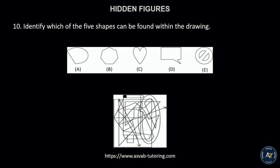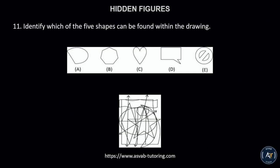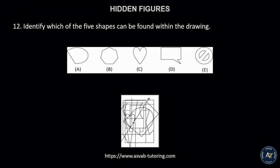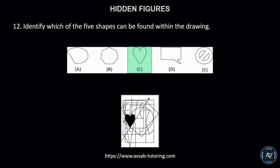Number 10. Identify which of the five shapes can be found within the drawing. The correct answer is letter D. Number 11. Identify which of the five shapes can be found within the drawing. The correct answer is letter B. Number 12. Identify which of the five shapes can be found within the drawing. The correct answer is letter C.